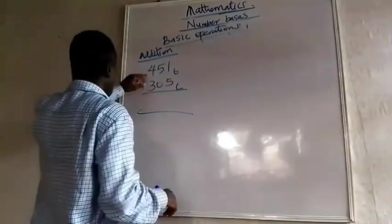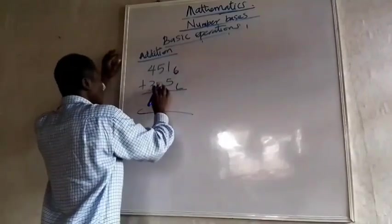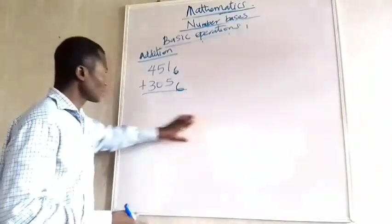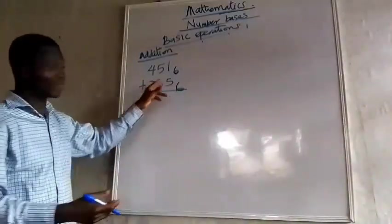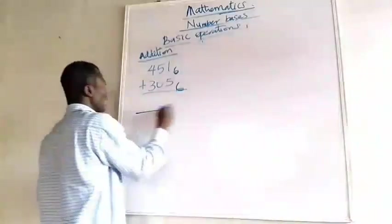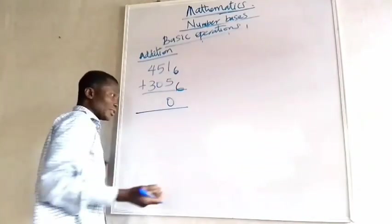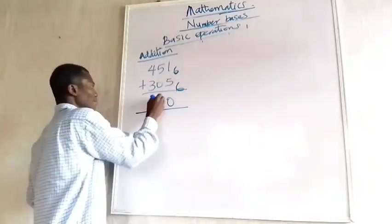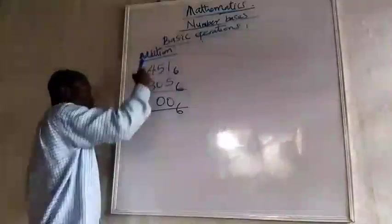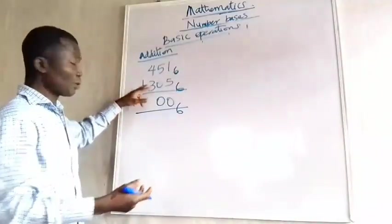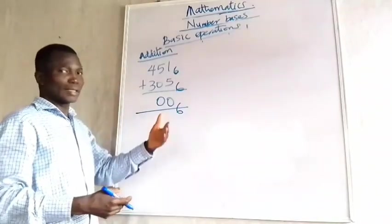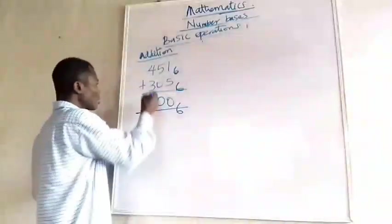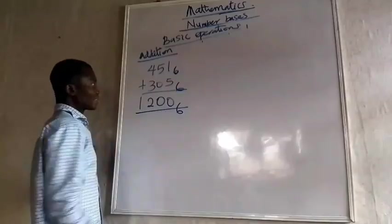Now let's work this one: 451 base 6 plus 305 base 6. Starting from the rightmost column: 1 plus 5 is 6, and under base 6 that is 10, so I write 0 and carry 1. Next: 1 plus 5 plus 0 is 6 again, still 10 under base 6, so I write 0 and carry 1. Then 1 plus 4 plus 3 is 8, which is bigger than 6.